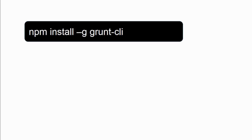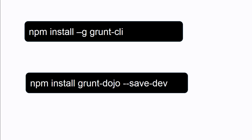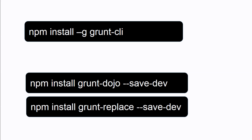Grunt installs just as easily as Bower did — just do npm install with the dash-G flag to make it global. We install dependencies for Grunt using npm, installing the grunt-dojo task and saving it to the package.json, which is the npm equivalent of bower.json. Here's an example package.json with all the dependencies a project might have — if a new developer comes on and downloads from Git, they just run npm install and it pulls everything from that package.json, just like Bower does.